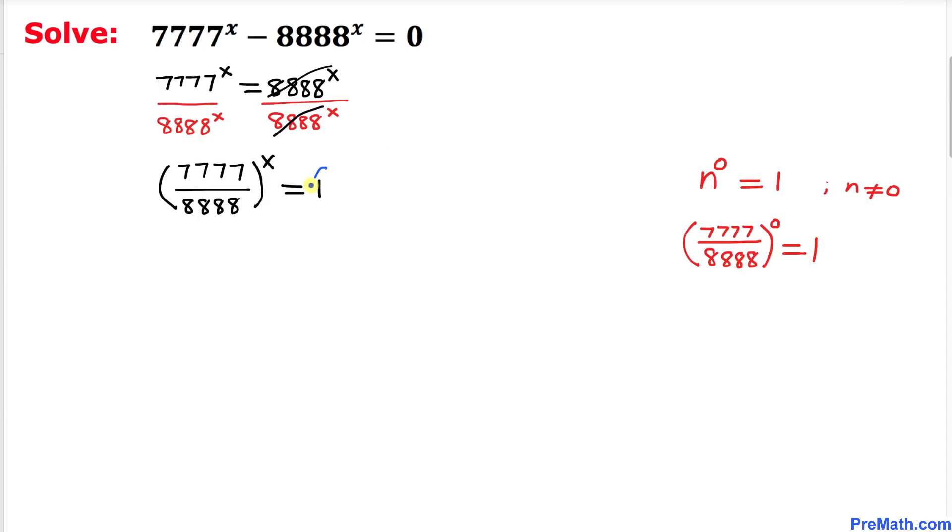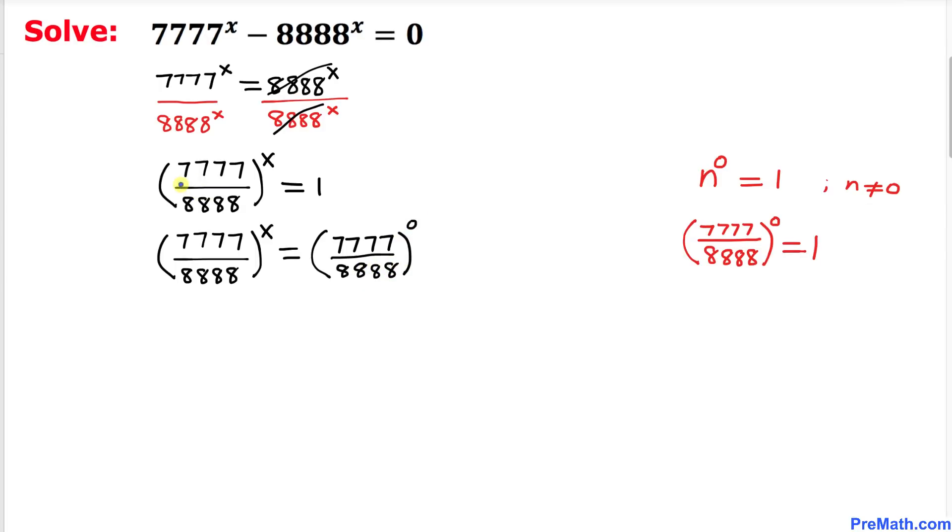Therefore, I am going to replace this 1 by this whole fraction power 0. Therefore, this right hand side 1 could be written as 7777 divided by 8888 power 0, and our left hand side is exactly the same.